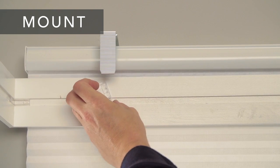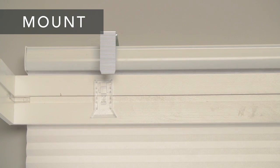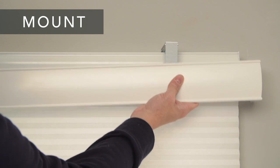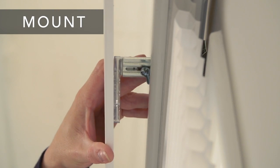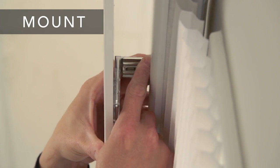Position the valance slides on the back of the valance to align with the marks. Now attach the valance. Adjust the projection of the valance with the wall brackets and tighten the screws.